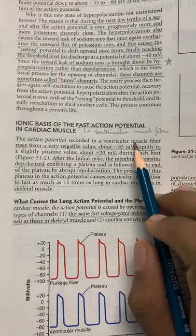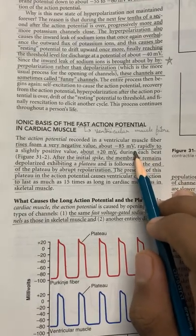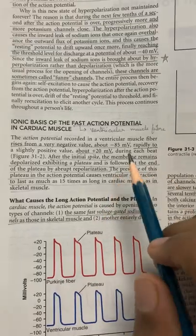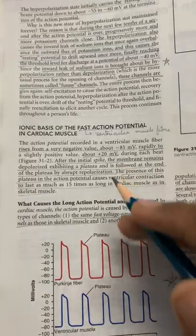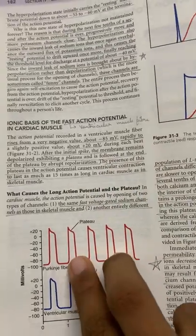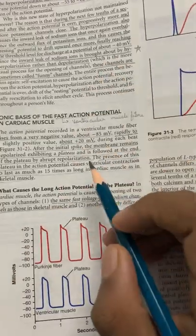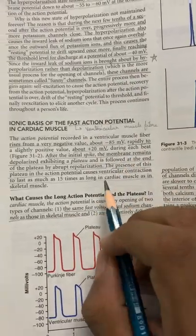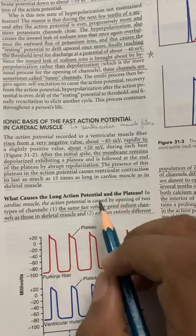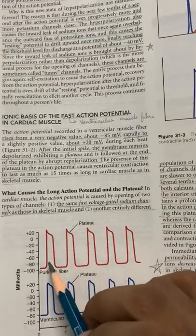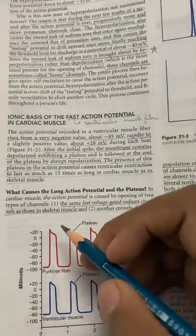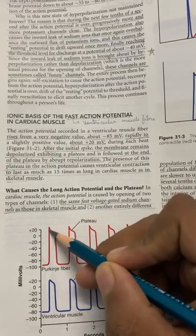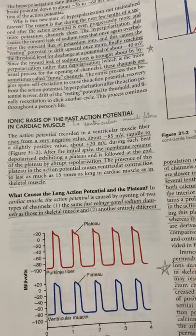The ionic basis of the fast action potential in cardiac muscle: the RMP has a very negative value of about minus 85 to minus 90 millivolts, and the threshold stimulus is about plus 20 millivolts. When a threshold stimulus occurs, fast voltage-gated sodium channels open, causing a rapid influx of sodium ions which produces fast and rapid depolarization.